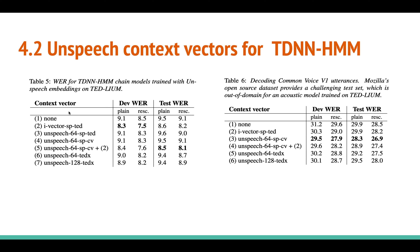For experiment four — UnSpeech context vector for TDN and HMM — the TDN+HMM is a speech recognition model combining a Time-Delay Neural Network with an HMM. The model is trained on TEDLIUM. Context vectors tested include: none, i-vector, and UnSpeech with different context/target widths. Results show dev and test word error rates. For TEDLIUM test data, UnSpeech-64 performs slightly better. For Common Voice data, UnSpeech embeddings combined with TDN+HMM as context vectors outperform all other models on both dev and test WERs.